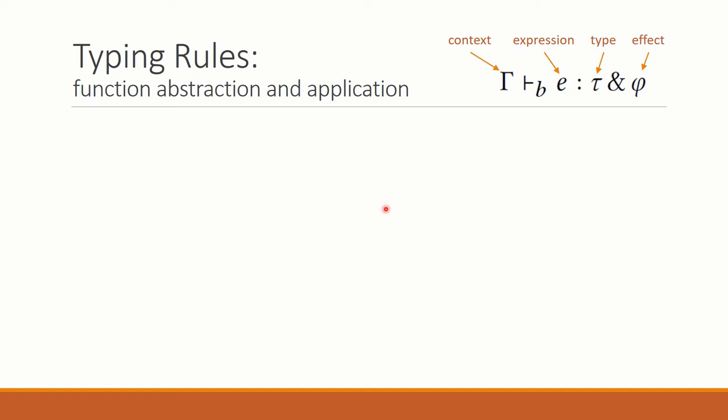Back to our type system. We have type judgments of this form. In a certain context, this expression has a type and an effect. We could probably extend the calculus with multiple effects, for instance to handle exceptions, but we didn't do so.